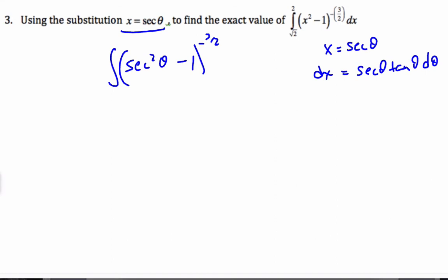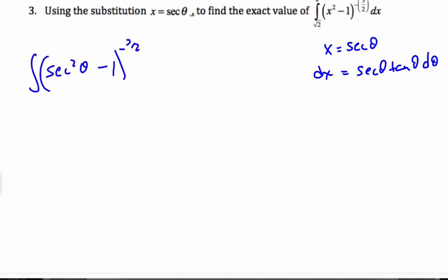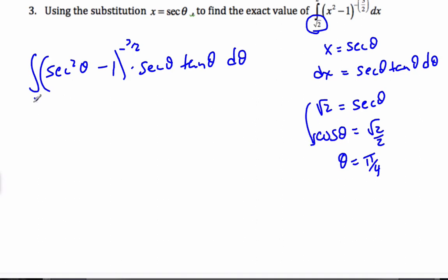And so my integral then is going to be this times my dx is secant theta tangent theta d theta. But my intervals are, these are x's. I want them to be thetas. And so square root of 2 is equal to secant theta. If I rearrange this, I know that cosine theta is equal to root 2 over 2. So theta is pi over 4. Similarly, I have 2 here. 2 is equal to secant theta. So switch it around to cosine. I get 1 half. And so theta for that is pi over 3. This is pi over 3.